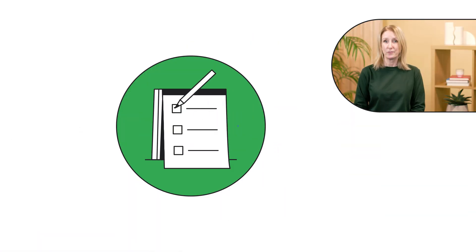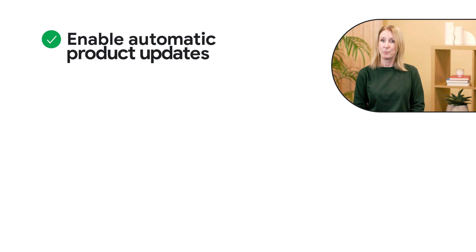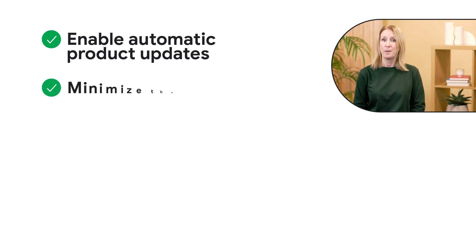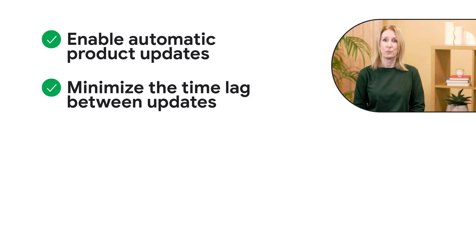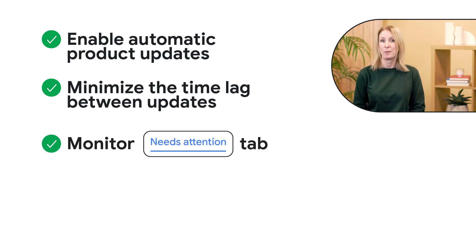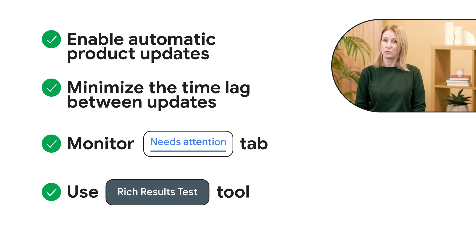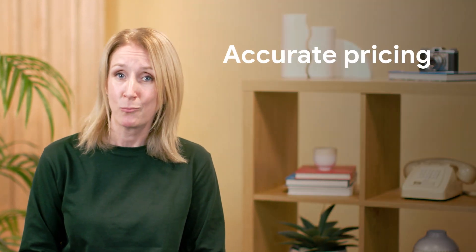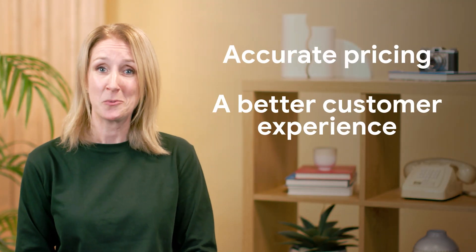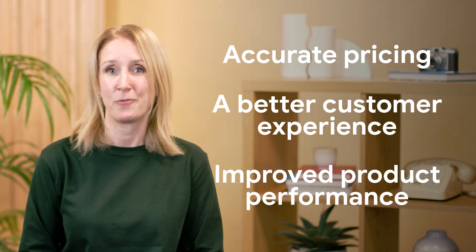To proactively avoid price mismatches, you can enable automatic product updates to sync prices and availability. Minimize the time lag between website updates and Merchant Center updates. Monitor your needs attention tab regularly and use the rich results test tool to validate your product pages. By following these best practices, you can ensure accurate pricing, a better customer experience, and improved product performance.